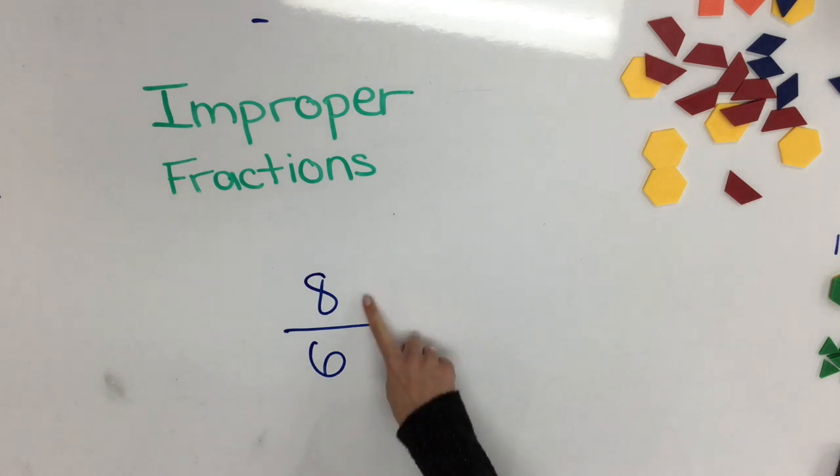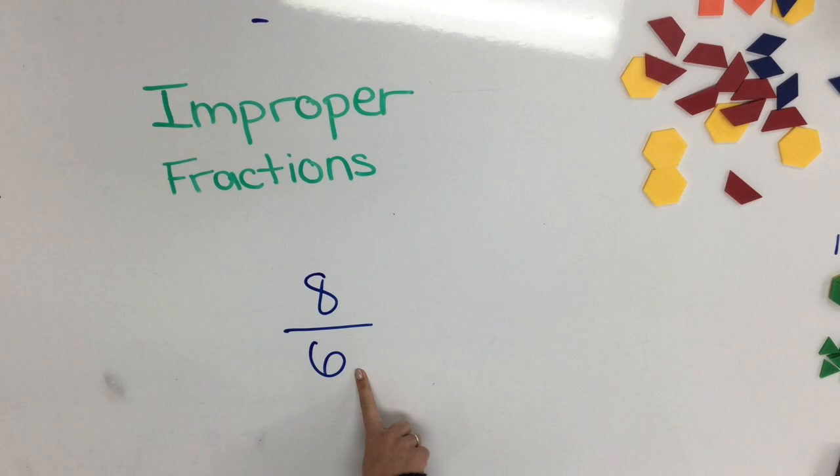So to build eight-sixths we need to have a look at the denominator. We know that our whole will have six equal pieces.